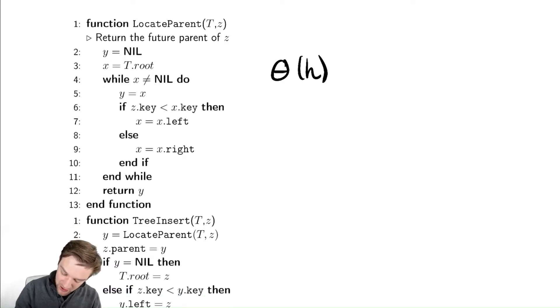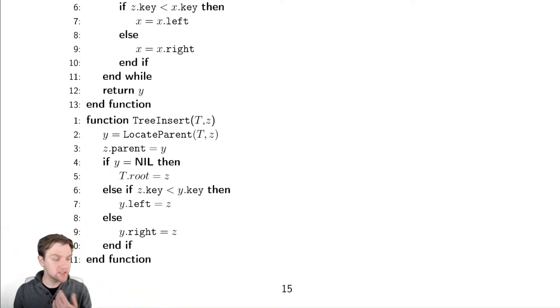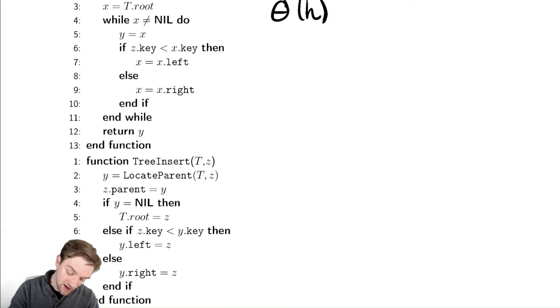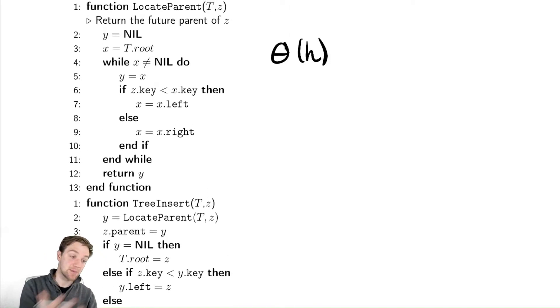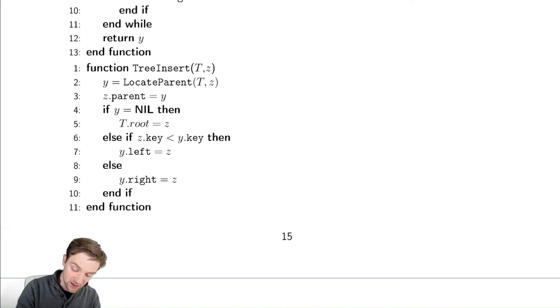Now assuming that we have this locate parent method our tree insert now looks much nicer. Notice this locate parent took like 12 lines so part of the reason I abstracted that idea out is because I wanted to make this look a little bit nicer. So step one find out where we got to go then my parent is going to get set to be y.